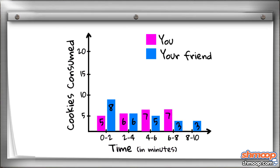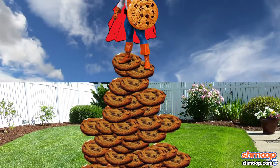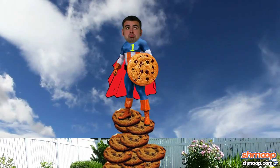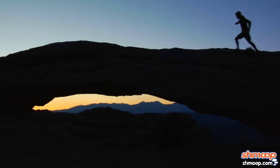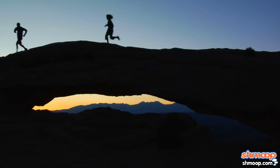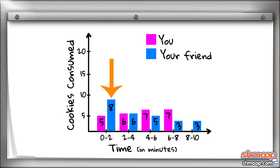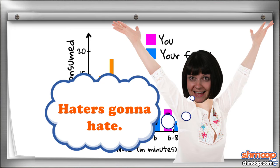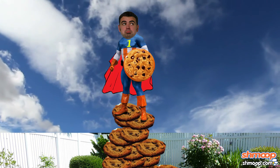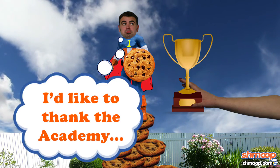Let's look at the two graphs side-by-side. Is there any way we can make your friend the hero in this case? As it turns out, your friend is actually a sprinter in the cookie-consuming department. He ate eight cookies in the first two minutes, while you only ate five. Of course, you did come back for the win, but we definitely think his speedy consumption is deserving of a shout-out.